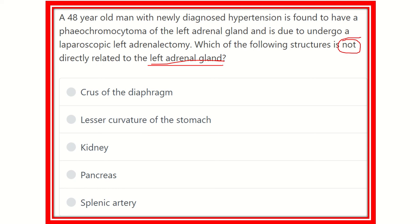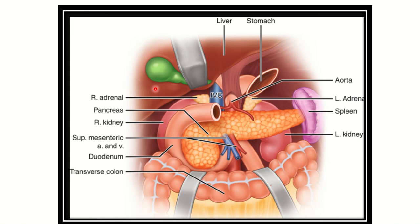The patient developed hypertension and was finally diagnosed with a pheochromocytoma of the left adrenal gland. First, we have to find out which structures are very closely related to the left adrenal gland, so it will be easy to identify which one is not. The answer options are: crus of the diaphragm, lesser curvature of the stomach, kidney, pancreas, and splenic artery.